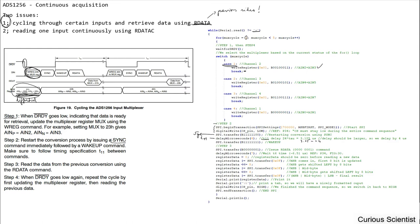We wait 4 microseconds and then issue a WAKEUP command as specified. That completes Steps 1 and 2. Step 3 says: read the data from the previous conversion using RDATA. The 'previous conversion' refers to the input selected before the current cycle iteration. We issue the RDATA command and wait for the T6 delay as discussed in the previous video.